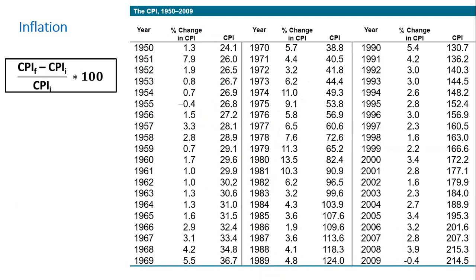Now, in order to calculate inflation, the formula for calculating the inflation rate looks like this: CPI final minus CPI initial, divided by CPI initial, times 100. So here, if we want to calculate the inflation rate between year 1950 and 1951, CPI final is 26 and CPI initial is 24.1. So it's 26 minus 24.1 divided by 24.1 times 100. The inflation rate is 7.9%.